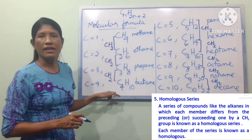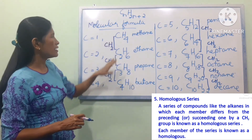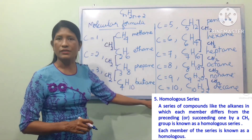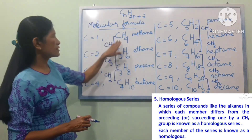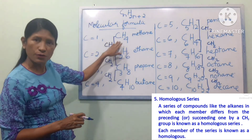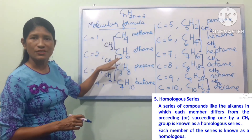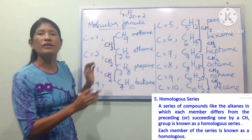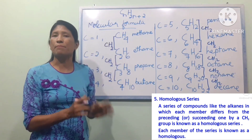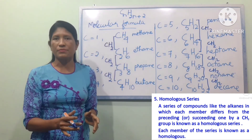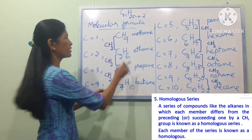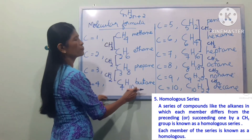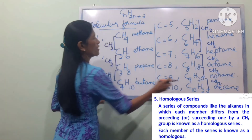For example, C1 is a synthetic homologous series. CH4 is a homologous, and it is a homologous. This series is a member of the series. This is homologous, homologous, and homologous.